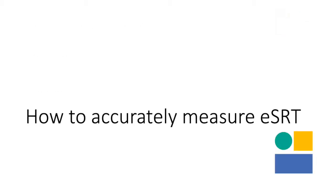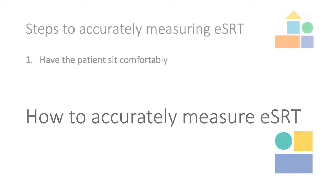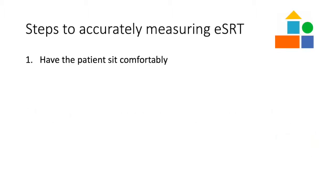How to accurately measure ESRT. Step 1: Invite the patient to sit in a comfortable position and instruct them to sit as still as possible. For some patients, it can be helpful to provide them with an activity such as watching a movie or reading a book.